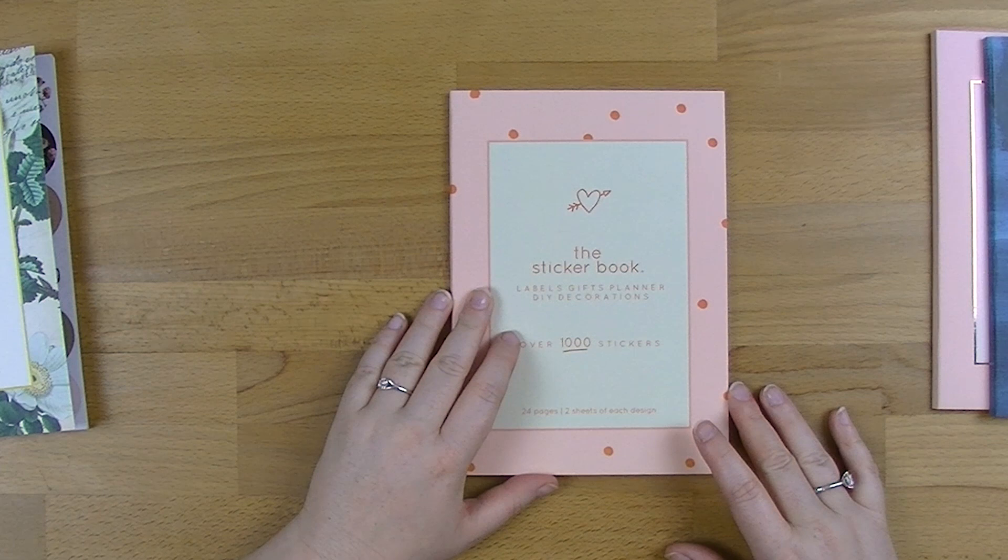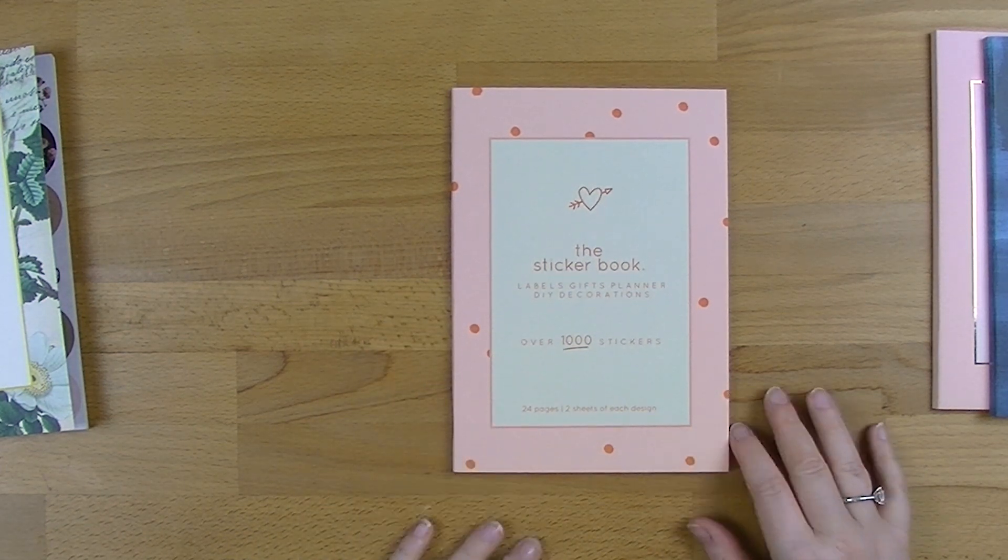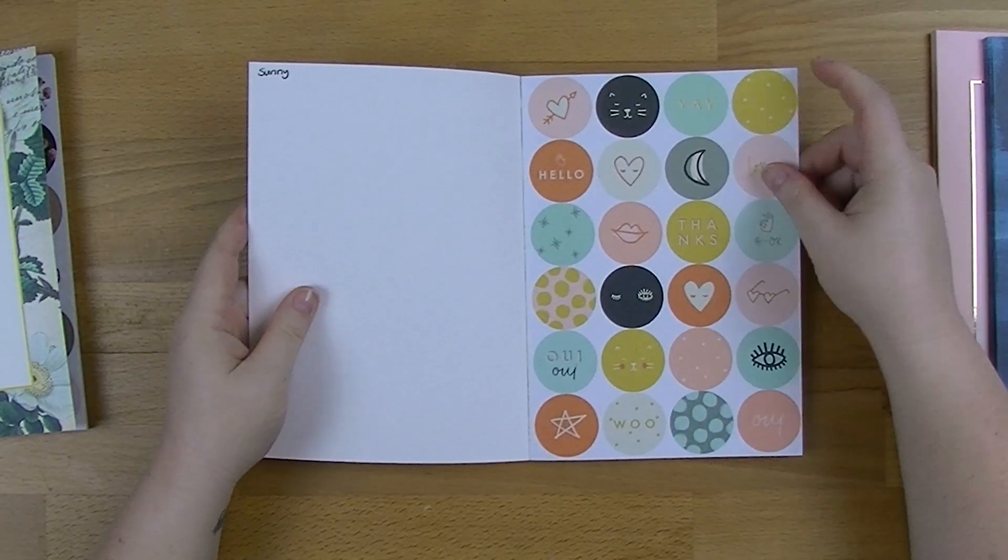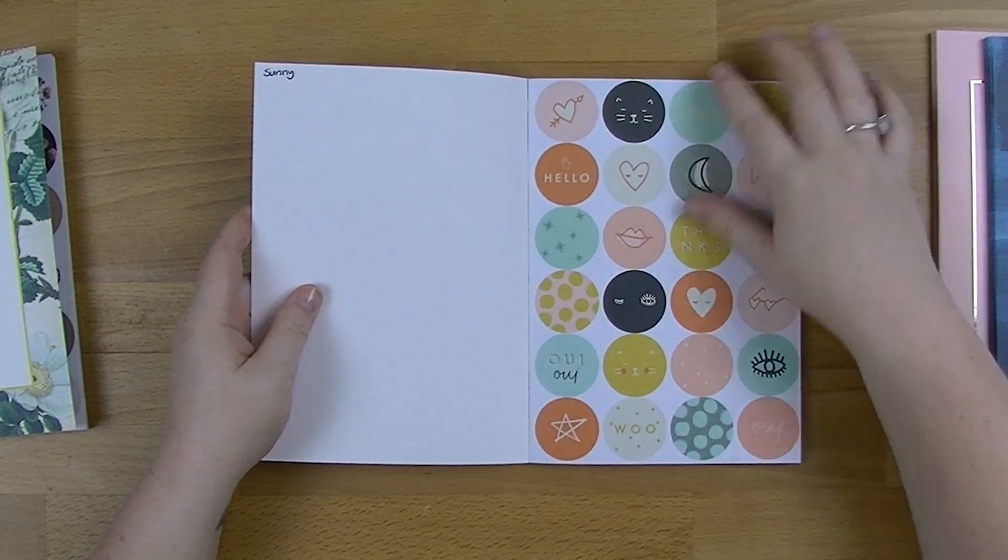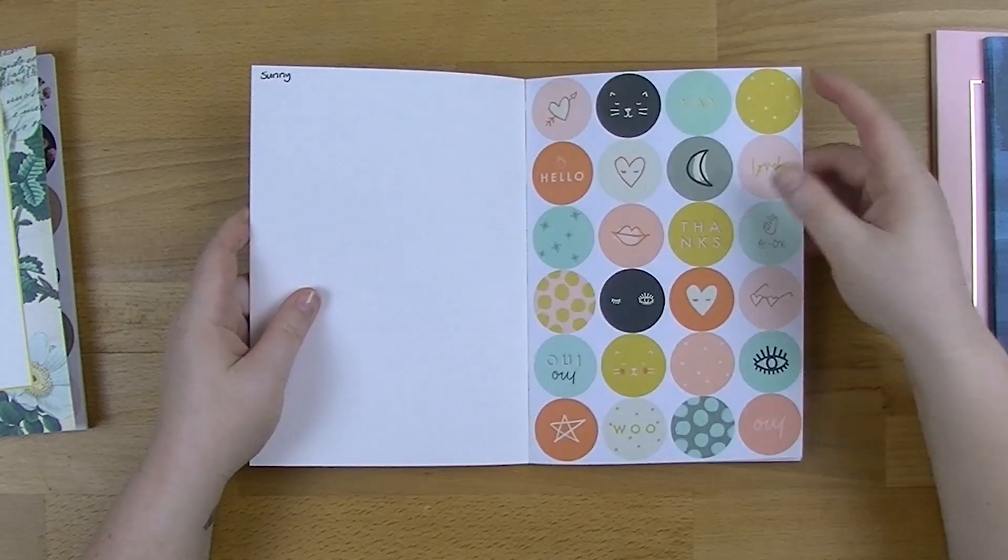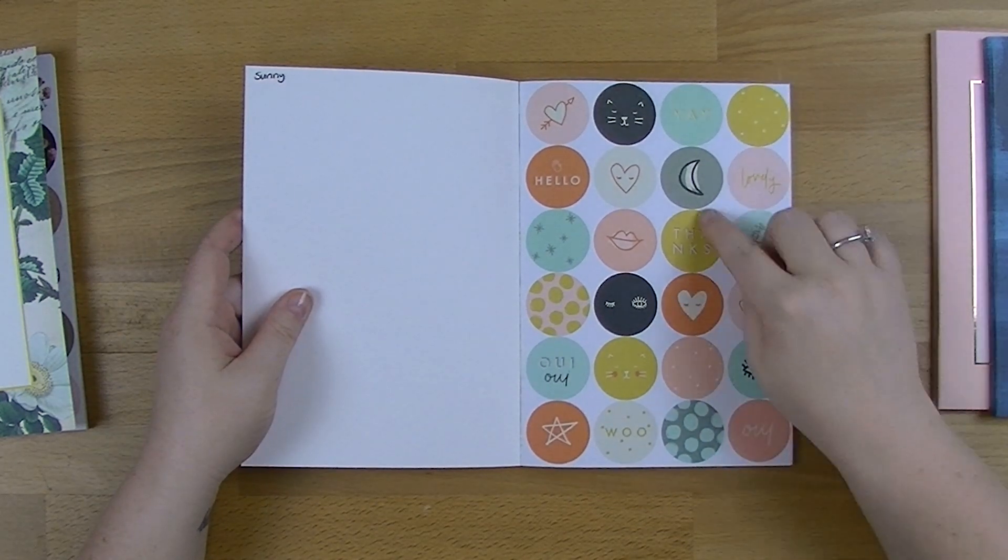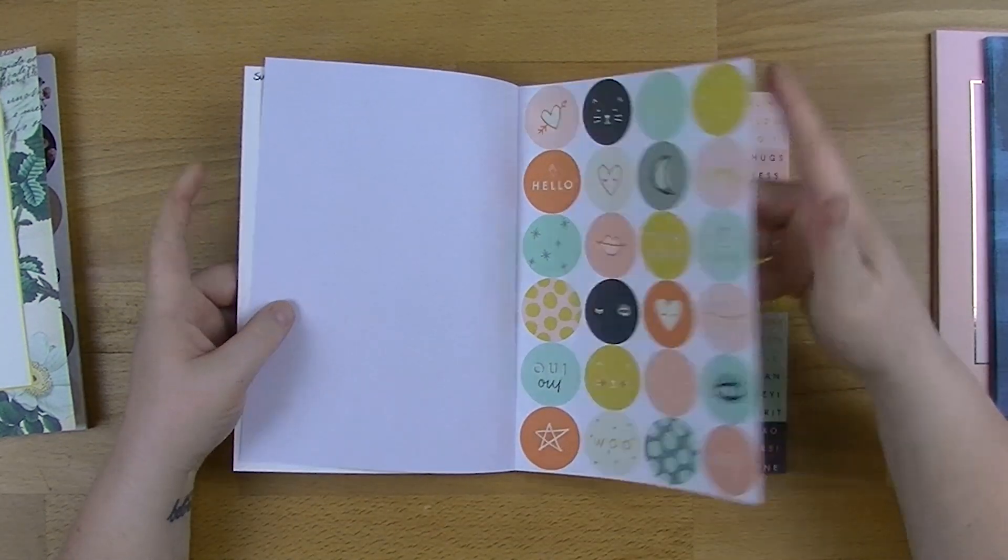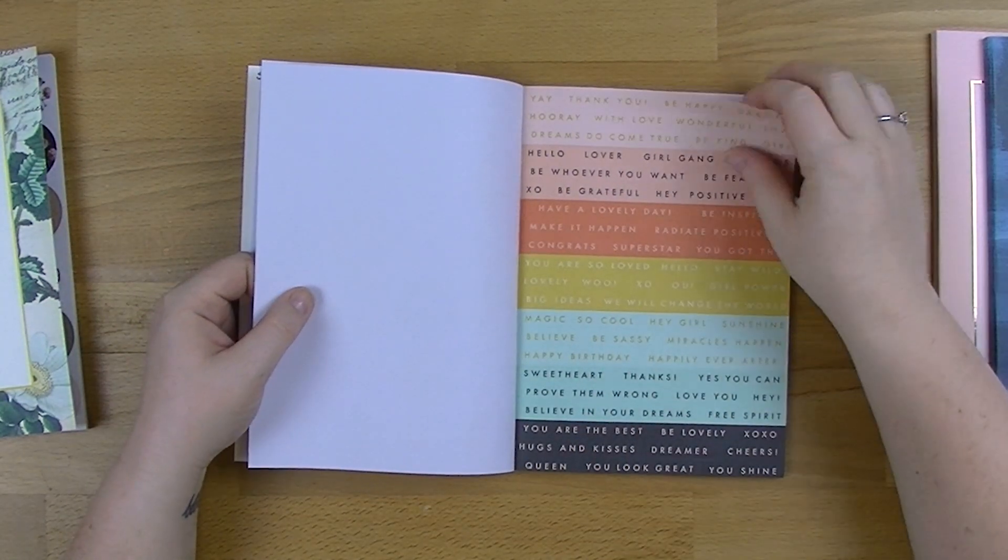Excuse you, Jen. Jeez, it's a hard life being a dog. So this next one is called the Sunny Collection. This one's got a little bit of damage to the side as well, but I think it's just the first page. So we've got some circles here with some cute cats and some little stars. I like the colour collection here. That's nice.